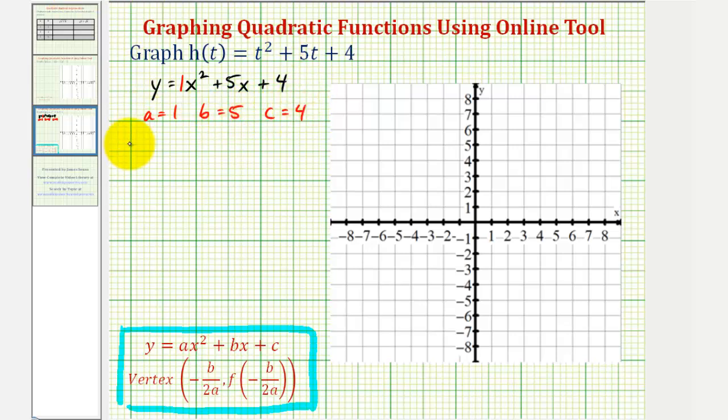So if we want to find the coordinates of the vertex, let's first find negative b divided by 2a. So x equals negative b, or negative 5, divided by 2 times 1. That's negative 5 halves, or in decimal form, negative 2.5. It might be more helpful to use the decimal value to graph on the coordinate plane, so let's give the x-coordinate as negative 2.5.